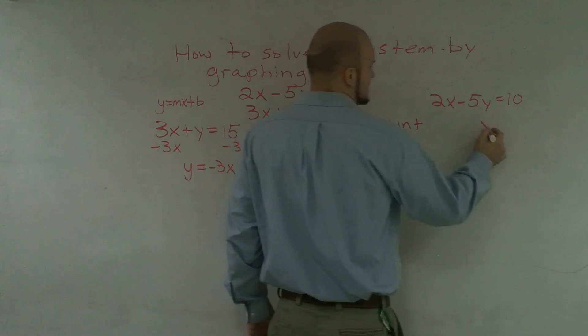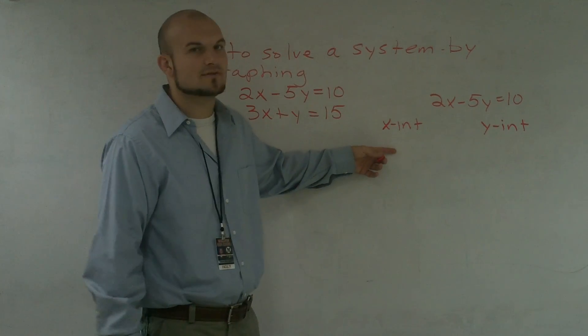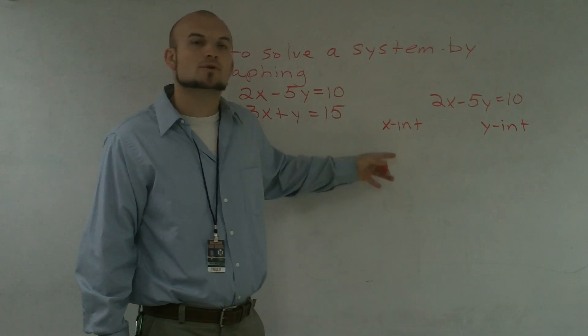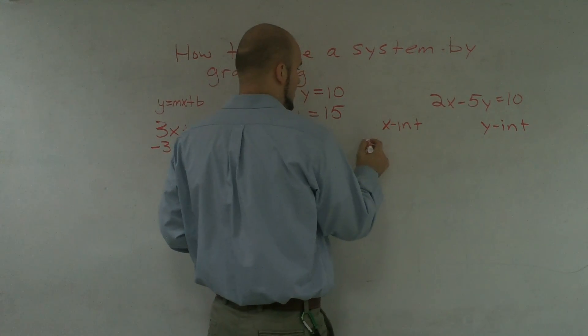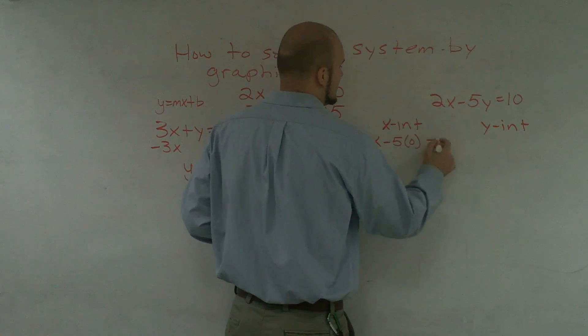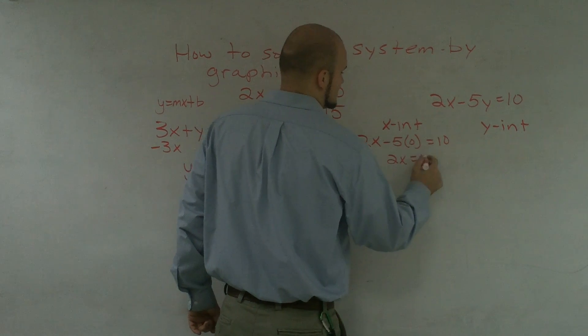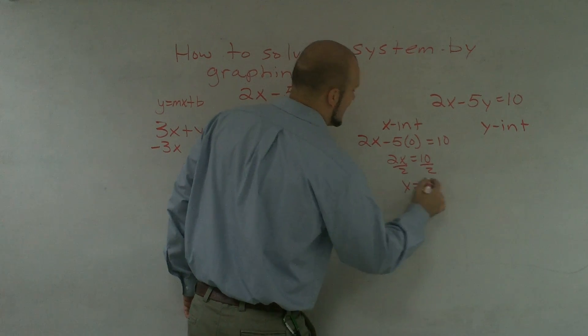So if I want to find the x-intercept and the y-intercept. And quick reminder, the x-intercept is where the graph crosses the x-axis. So therefore, your y value is going to be 0. So I'm going to plug in a 0 in for y. So I get 2x - 5(0) = 10. 2x = 10. Divide by 2. x = 5.